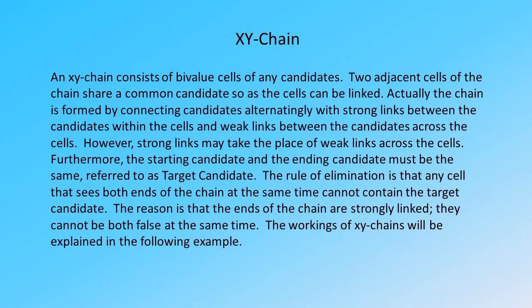An XY chain consists of bi-value cells of any candidates. Two adjacent cells of the chain share a common candidate so that the cells can be linked. The chain is formed by connecting candidates alternatingly with strong links between the candidates within the cells and weak links between the candidates across the cells. Strong links may also take the place of weak links across the cells. The starting candidate and the ending candidate must be the same, referred to as the target candidate.